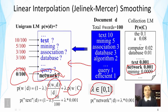Let's see how it works for some of the words here. For example, if we compute the smoothing probability for text, the maximum likelihood estimate gives us 10 over 100. But the collection probability is this. So we just combine them together with this simple formula.